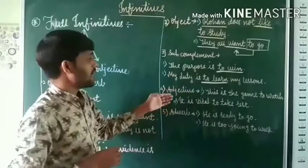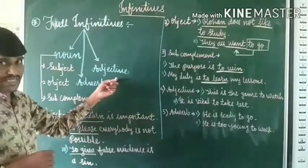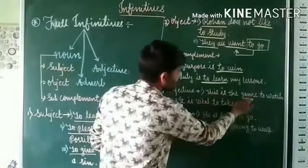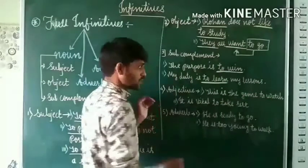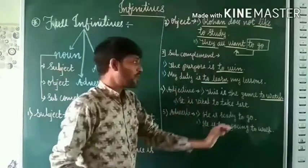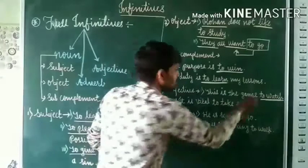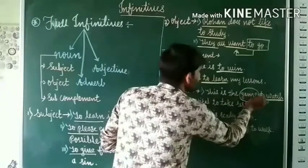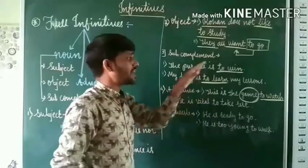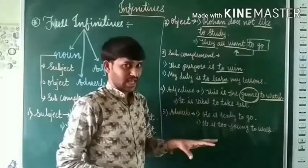Next, full infinitives can function as an adjective in the sentence. For example: 'This is the game to watch.' Here 'to watch' is a full infinitive functioning as an adjective, which modifies the noun 'game.' So 'to watch' modifies 'game' and functions as an adjective.